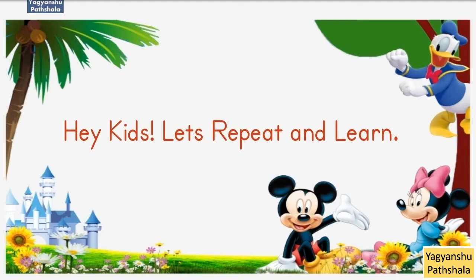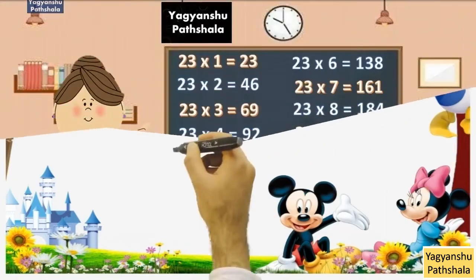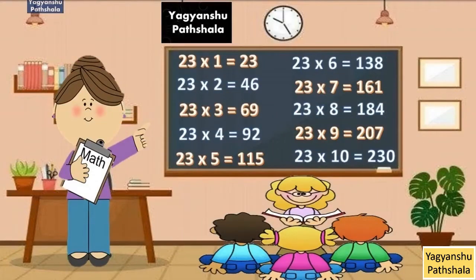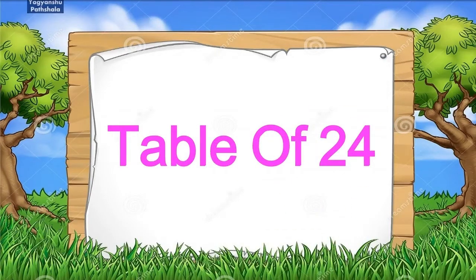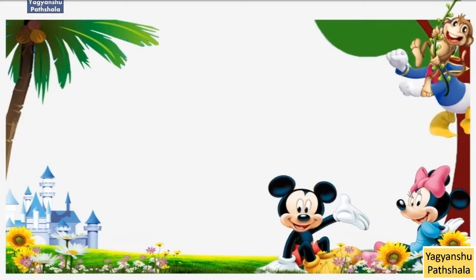Hey kids, let's repeat and learn. 23 1 Jaa 23. 23 2 Jaa 46. 23 3 Jaa 69. 23 4 Jaa 92. 23 5 Jaa 115. 23 6 Jaa 138. 23 7 Jaa 161. 23 8 Jaa 184. 23 9 Jaa 207. 23 10 Jaa 230.